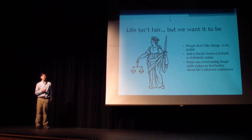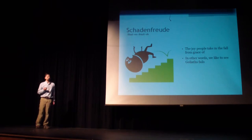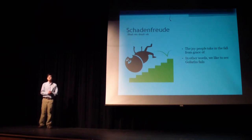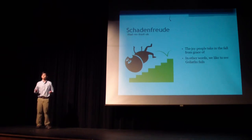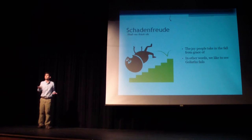Another reason we root for underdogs is called schadenfreude — it's German, and it means to take pleasure in the downfall of others. According to this theory, we don't care that the underdog wins; we want the overdog to lose. We like seeing people screw up and fail because it makes us feel better about ourselves. When someone we think is smarter than us does terribly on a test we did great on, we feel good.